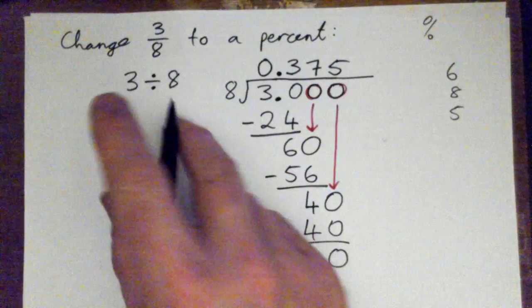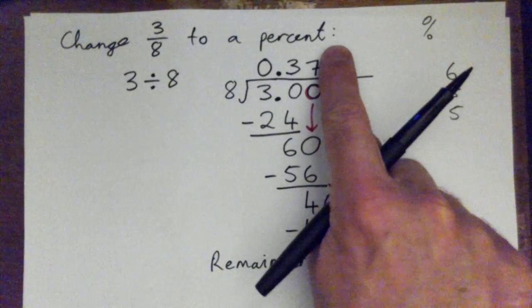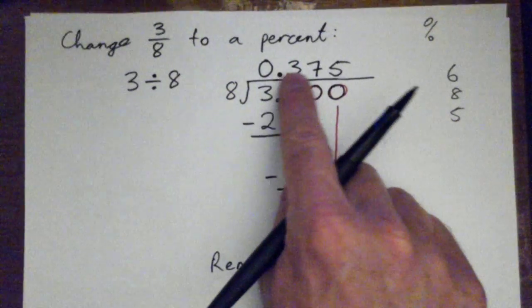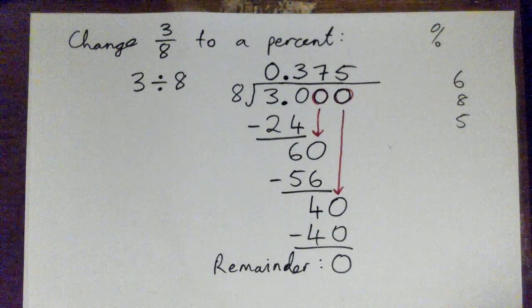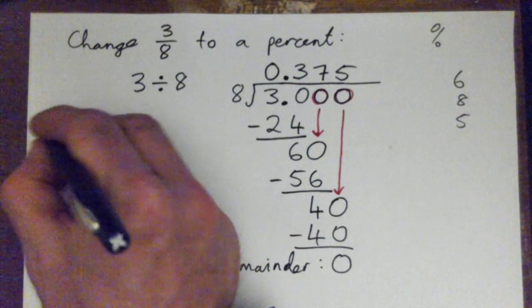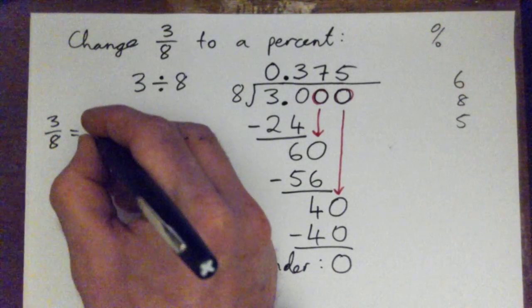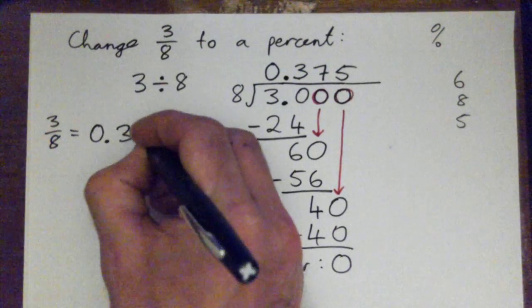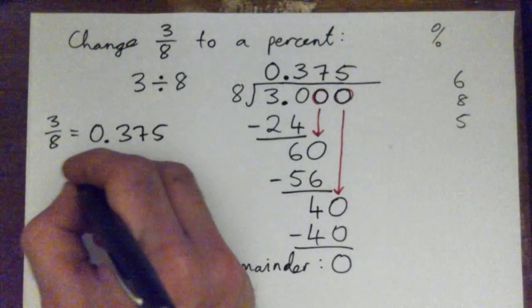So three-eighths to a percent, we haven't done yet, but we did get it as a decimal. Right? So we have three-eighths equals zero-point-three-seven-five. So now, what's that as a percentage?